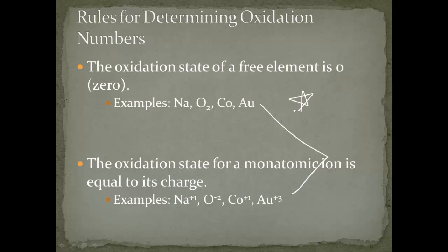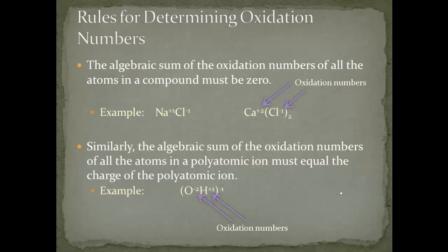It's important to understand the difference between free elements and ions. Free elements are not paired up with anything — they are just the atoms, so they are zero. The ions listed have an ionic charge, and normally you'd see them in a compound like NaCl. In that case, you would know it's the ion, so its oxidation number is the same as its charge.